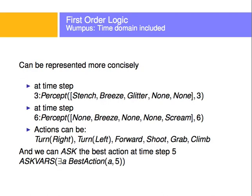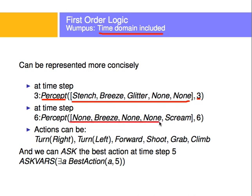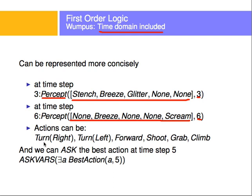In the Wumpus world, time is part of the domain because we're moving in a game. At time 1 and time 2 you're in different places. We can represent percepts like: Percept([stench, breeze, glitter, none, none], t=3) and Percept([none, breeze, none, none, scream], t=6). We can have actions such as turn right, turn left, forward, shoot, grab, climb. And we can ask the best action at time step 5 — we'll use askVars for that.